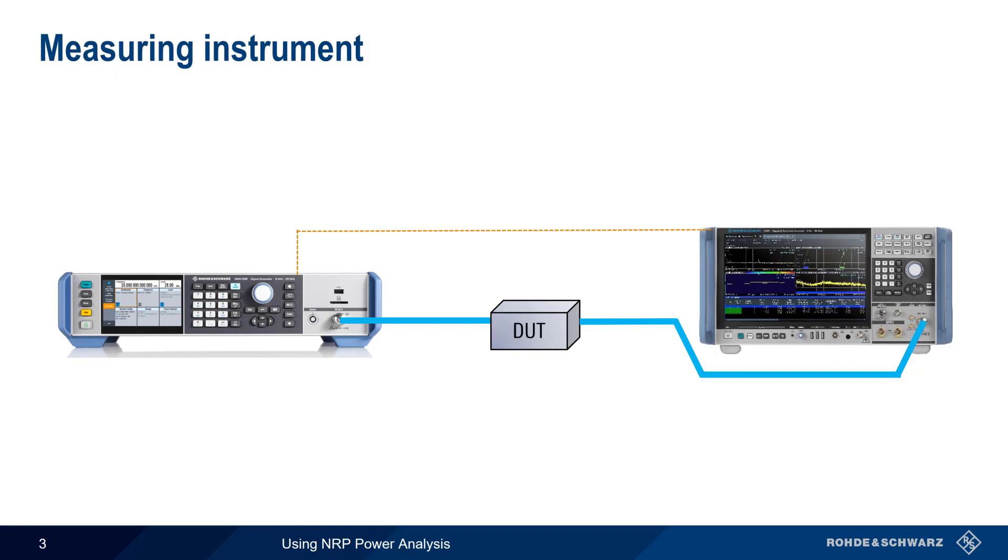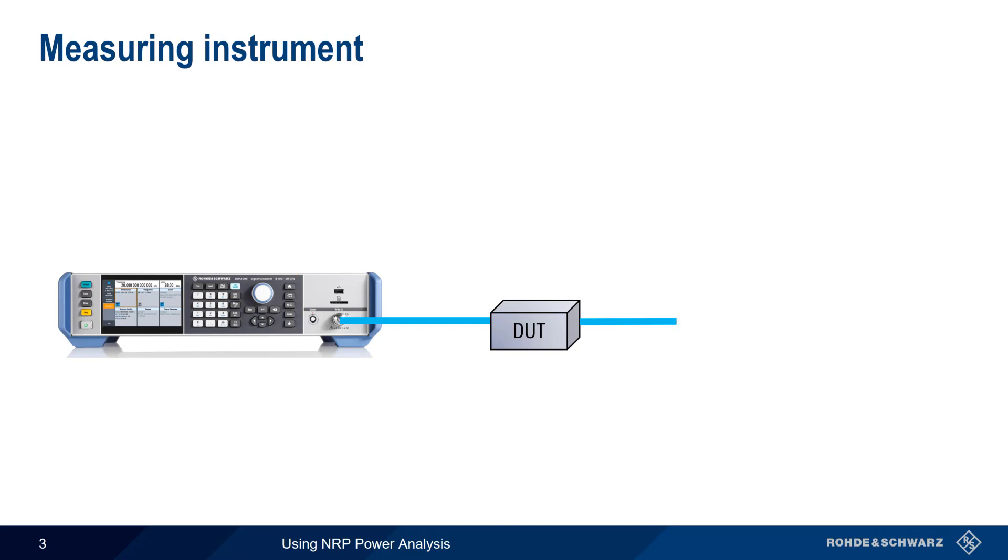For some types of testing, especially when the signals involved are vector signals, a spectrum analyzer is the best choice for a measuring instrument. However, for many types of tests involving scalar measurements, a simpler and more cost-effective solution is using a power sensor as the measuring device.